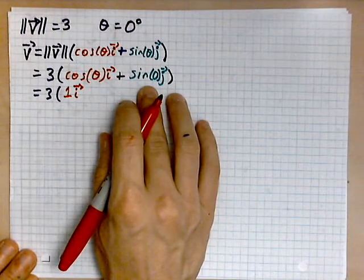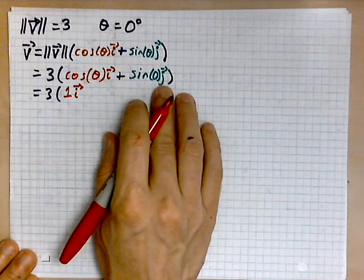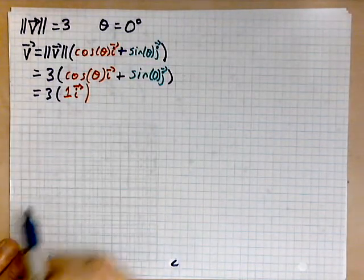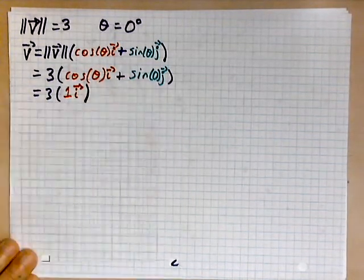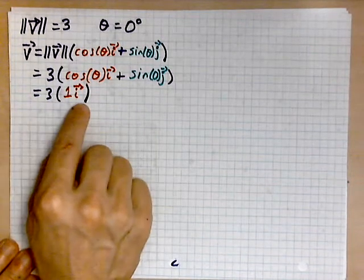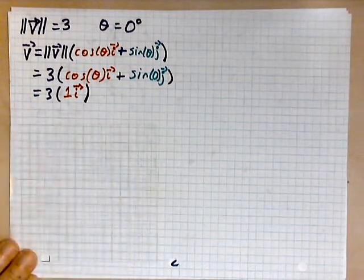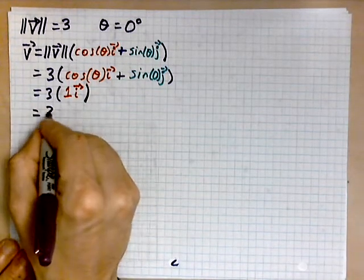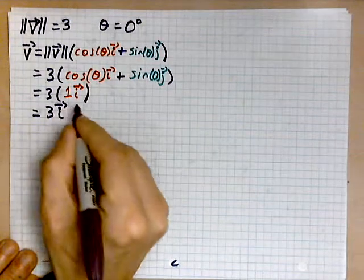Sine of zero degrees, of course, is zero. So, that disappears. And all that is left is this. Three times one i. Of course, we wouldn't write it in this form. So, we simply write this now as three i.